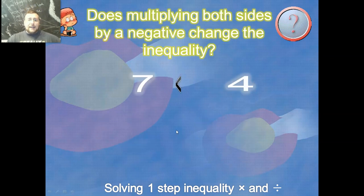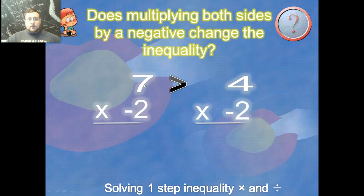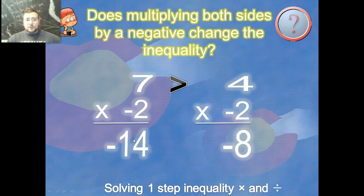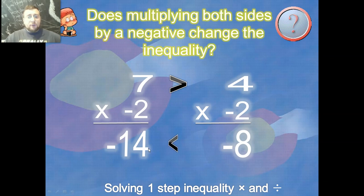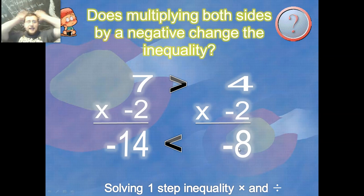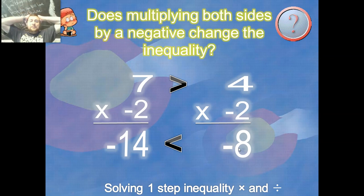Sadly, there is an exception: if you multiply by a negative. Let's see what happens: seven times negative two is negative 14, and four times negative two is negative eight. Four was smaller than seven, but negative 14 is smaller than negative eight — the sign flipped! Why did it flip?